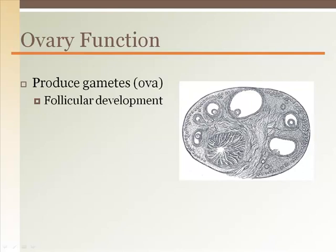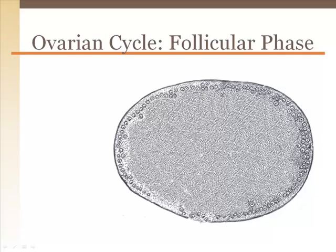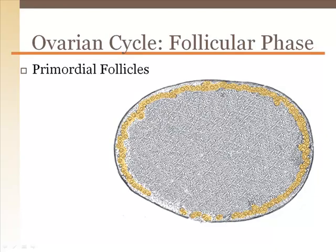Throughout the cycle, cells within the ovary produce a variety of hormones. Estrogens aid in the rebuilding of the lining of the uterus after menstruation, while progesterone promotes glandular secretions in the uterine lining in preparation for implantation of a fertilized egg. Inhibin with progesterone suppresses follicular development in the weeks after ovulation, while relaxin reduces uterine contractions to aid implantation of a fertilized egg.